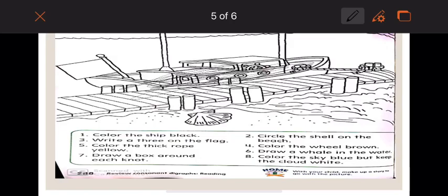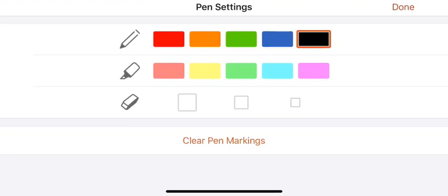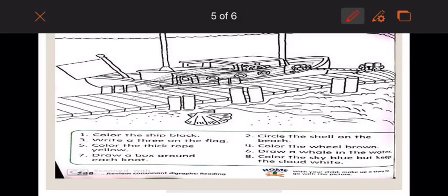Number two, circle the shell on the beach. Where is the shell on the beach? Let me choose something else for you. Number two, this is the shell on the beach. Number three, write three on the flag. I will write number three here on the flag.